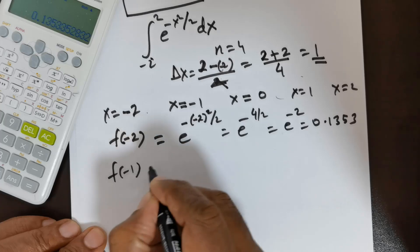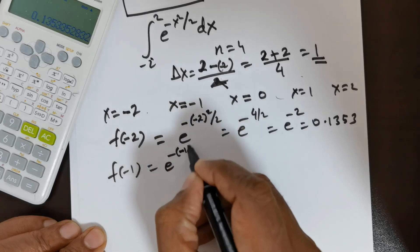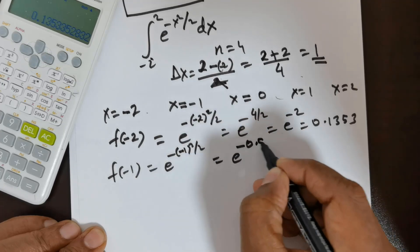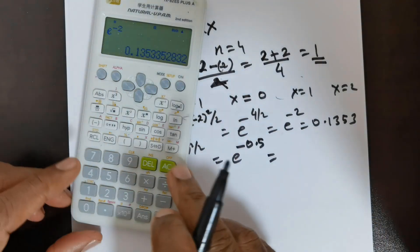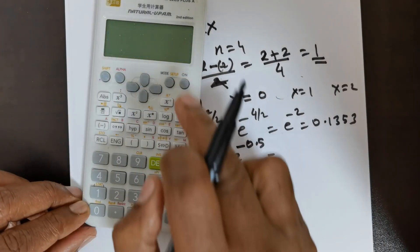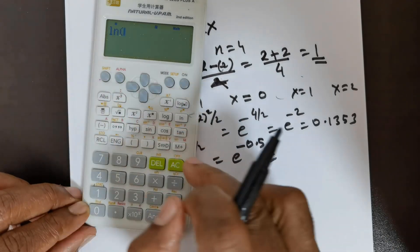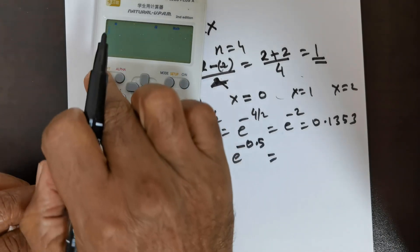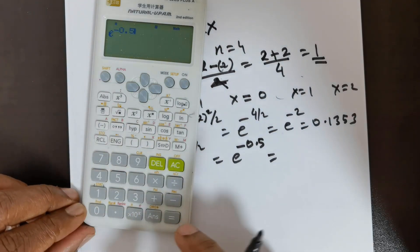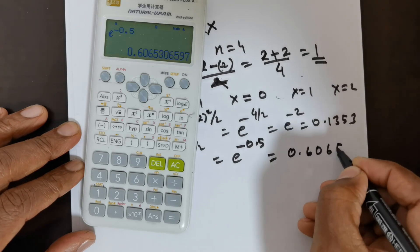The next is f(−1): e raised to the power of negative of (−1) squared divided by 2, which is e raised to the power of negative 0.5. That is 0.6065.